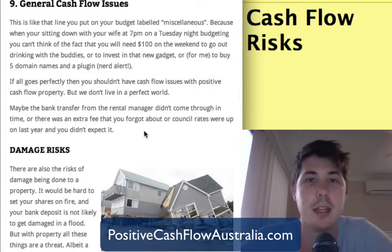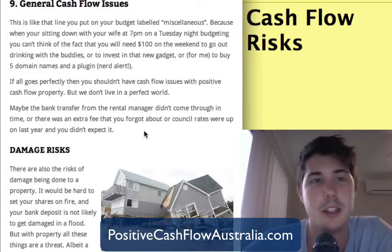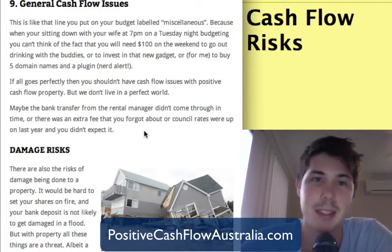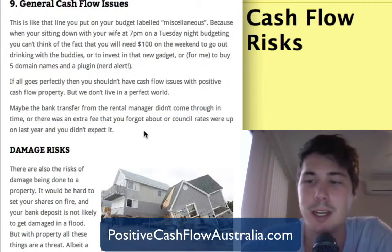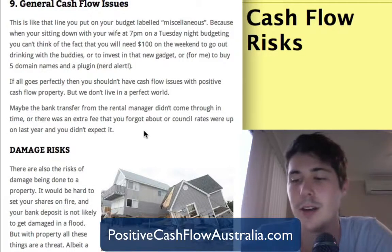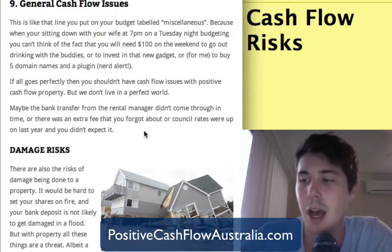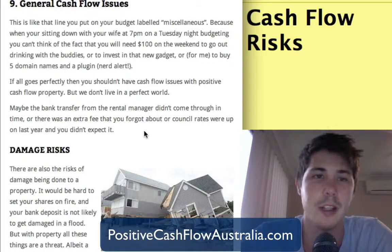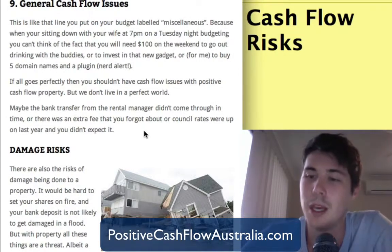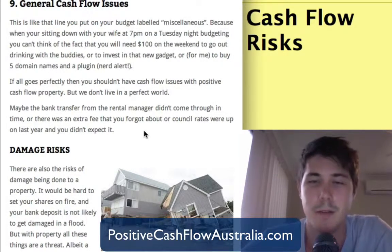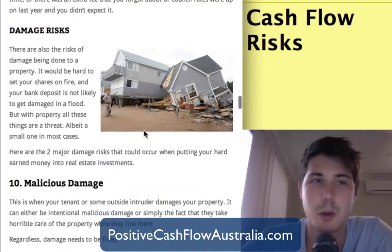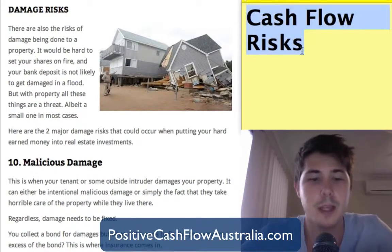Number nine and the last cash flow risk is just general cash flow issues — what you'd put on your budget as miscellaneous. When you're sitting down doing your budget, you don't necessarily think of every expense that might come up. The same goes for property: there are a lot of things you can't think of when you're sitting down planning, so you need to have that miscellaneous buffer built in.